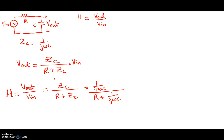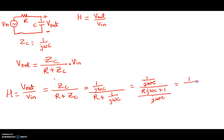Taking the denominator: the numerator is still 1 over jωC. The denominator we can write as R times jωC plus 1, divided by jωC. The jωC terms cancel, and what we end up with is equal to 1 over (1 + jωRC). This is the transfer function.